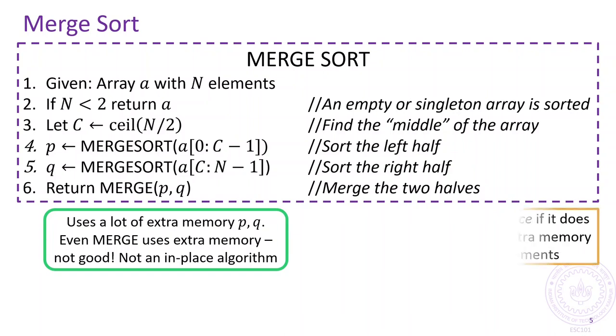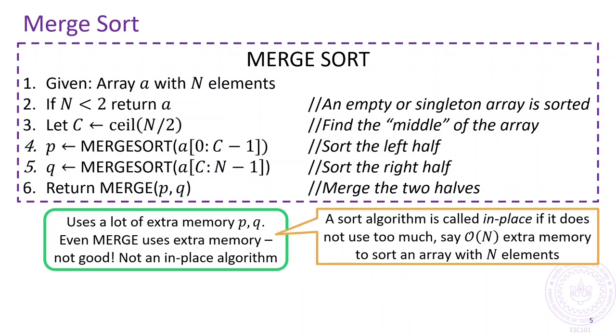Recall that a sorting algorithm is called in-place if it does not require too much, say order n additional memory to sort an array with n elements. For example, to implement the selection sort or insertion sort algorithms, we only needed two or three extra variables to implement swaps. We needed those same two to three variables no matter how large was the array we were sorting.